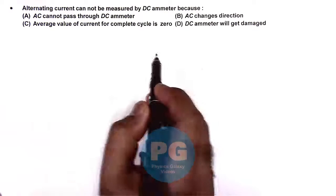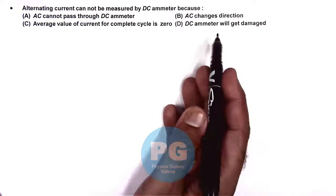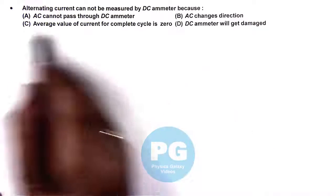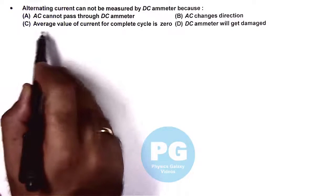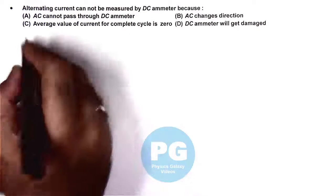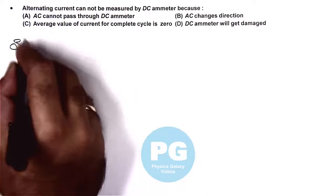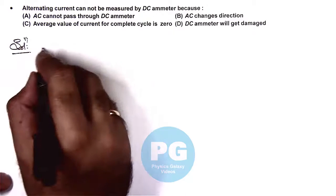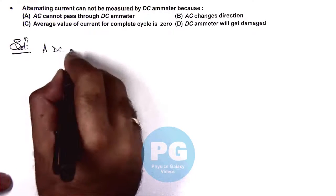We can directly state this is a theoretical question and the most appropriate answer is option C which says the average value of current for complete cycle is zero. Because we can write down a reason that a DC ammeter measures the average value of current passing through it.